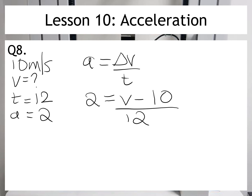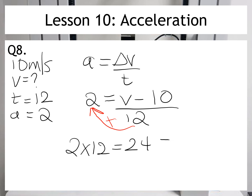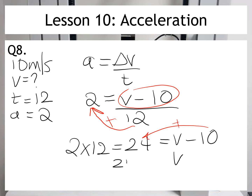Now, again, I want to move the 12 up. So because it's divided now, I'm going to need to multiply it. When I do that, I have 2 multiplied by 12, which is equal to 24, which is equal to v minus 10. So to find v, I need to move 10 across to the other side. And at the moment, 10 is minus 10, so I'm going to have to add it to move it to the other side. So I'm going to end up with 24 plus 10 equals v, which is 34 metres per second. And there we have the final answer.